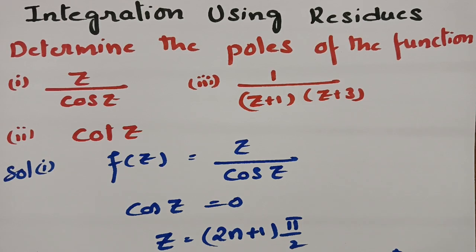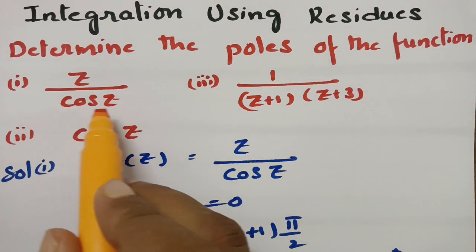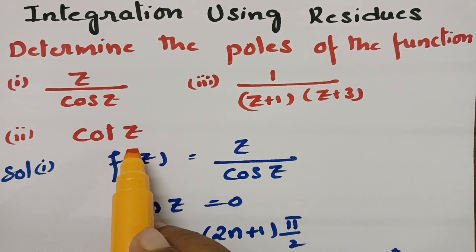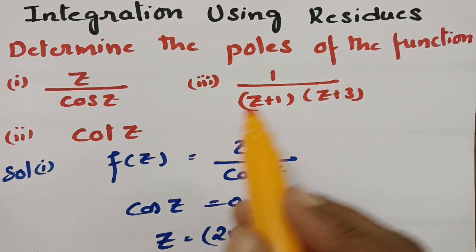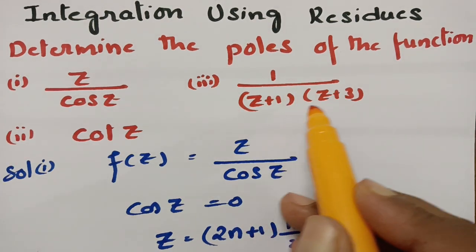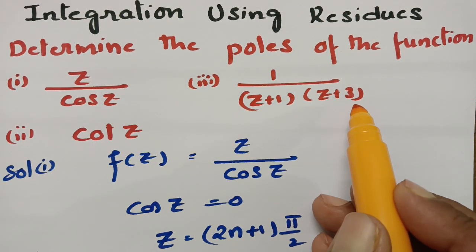This video is on integers using residues. In today's video, we are going to find out the poles of the function z by cos z, next cot z, and next 1 by (z+1)(z+3).